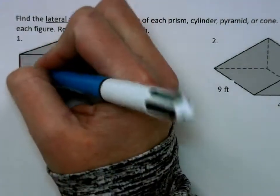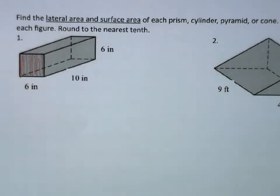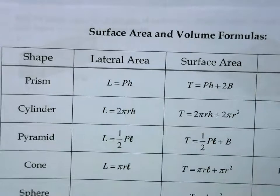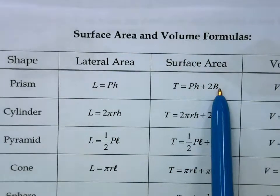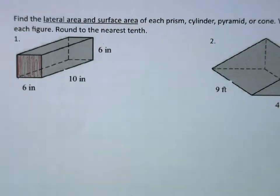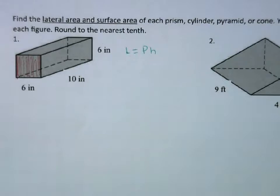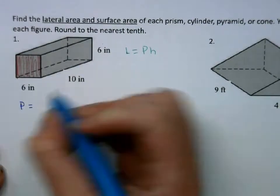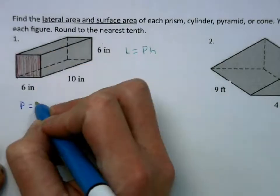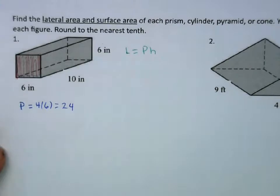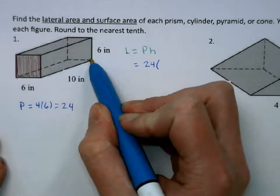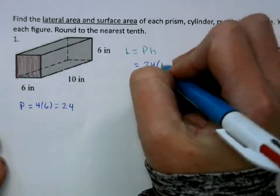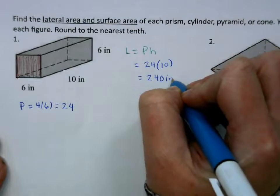For this first one, our base is going to be this square, so this is a square prism. On your formula sheet, the prism is in the top row. The lateral area is pH, and the surface area is pH — which is our lateral area — plus 2B. The perimeter is the perimeter of the base: 6 plus 6 plus 6 plus 6, or 4 times 6, which is 24. The height is the distance between the two bases, so the height is 10, which makes the lateral area 240 inches squared.